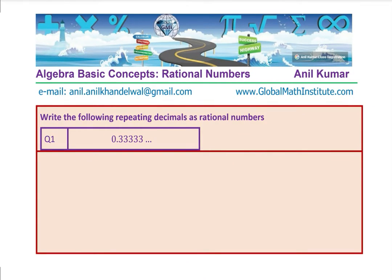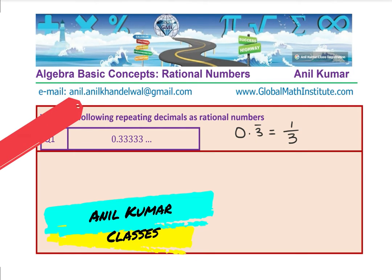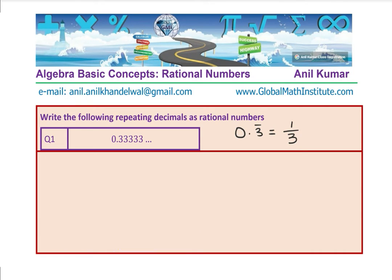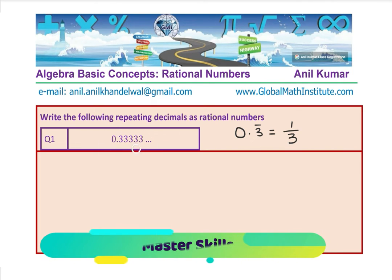Many of you would have got this answer: 0.3333 recurring, which I could also write as 0.3 recurring, which is 1 over 3. If you check the value of 1 over 3 on your calculators, you will see 0.333 recurring. But how do we get this is what we should know. Once we know that, we can write any repeating decimal number as a rational number. Let us look into the method.